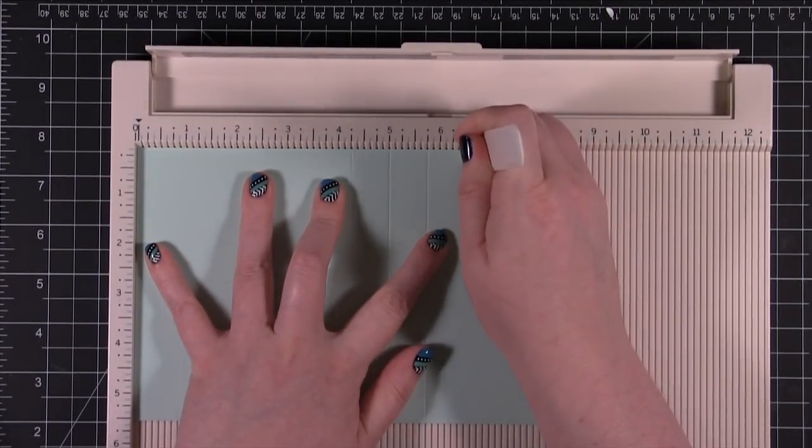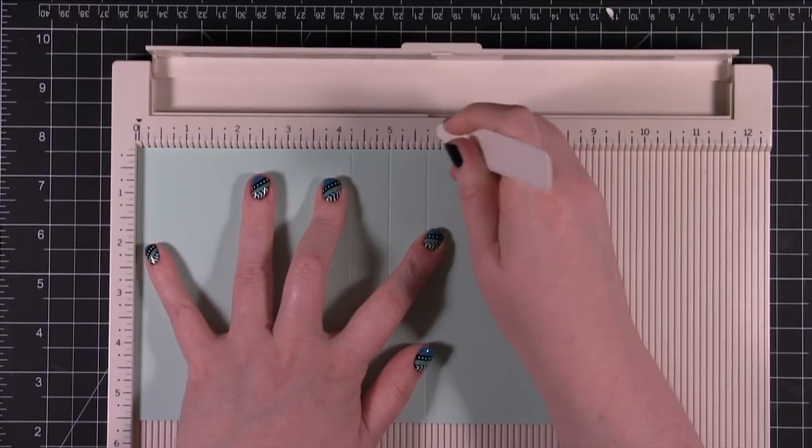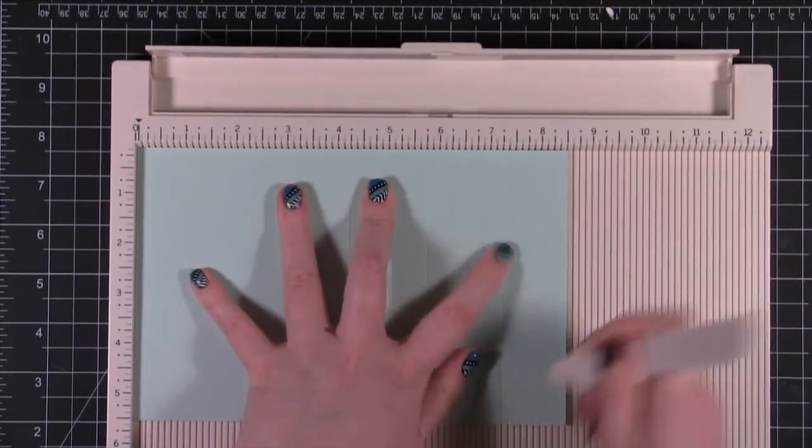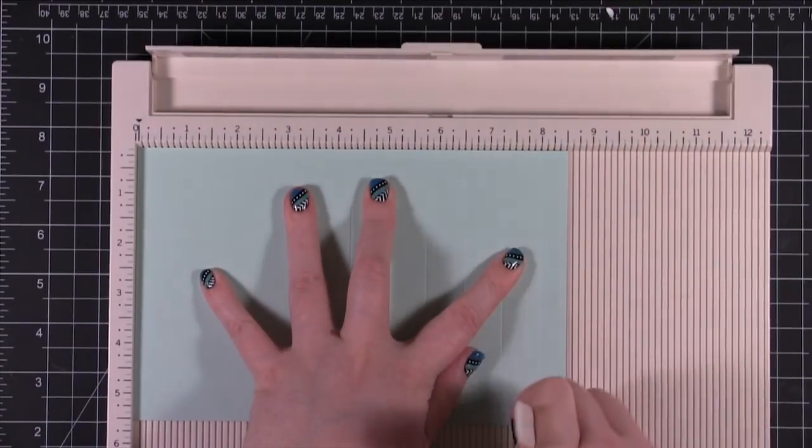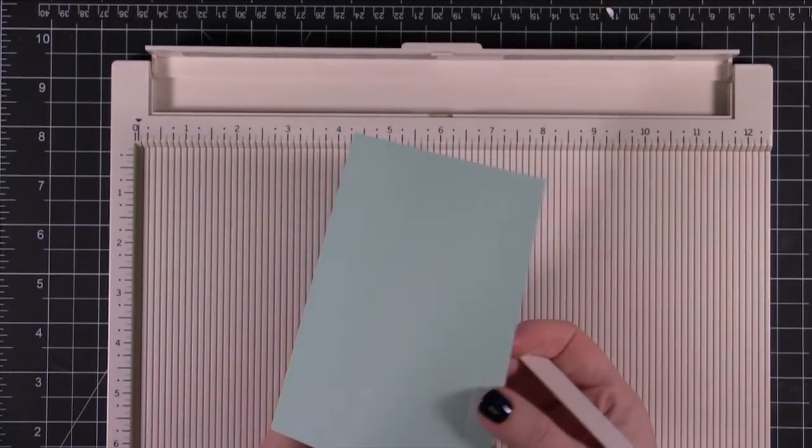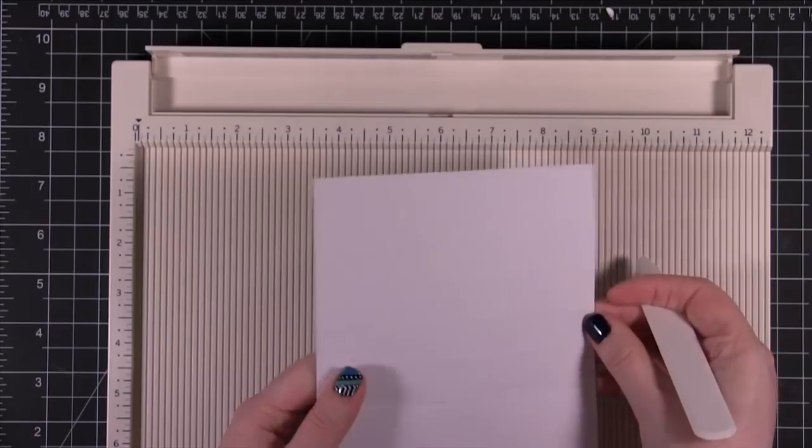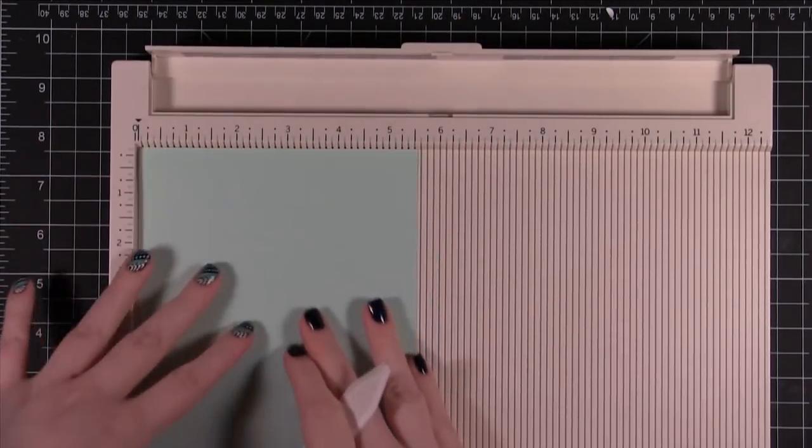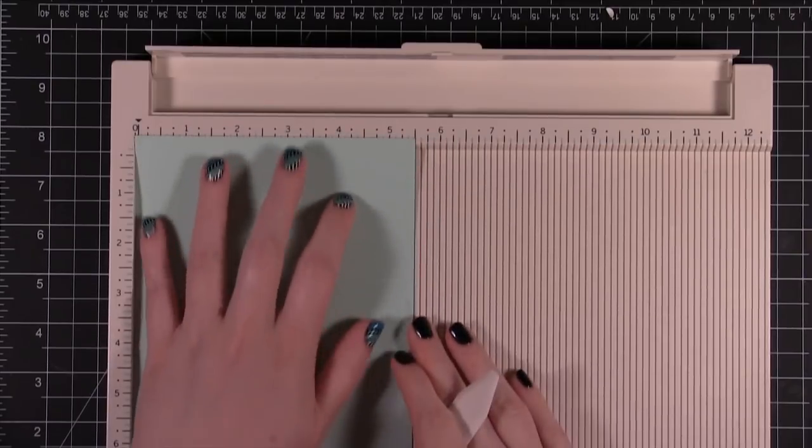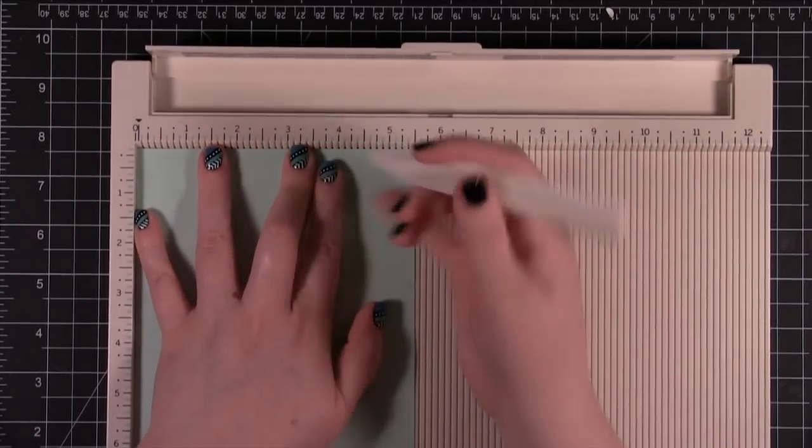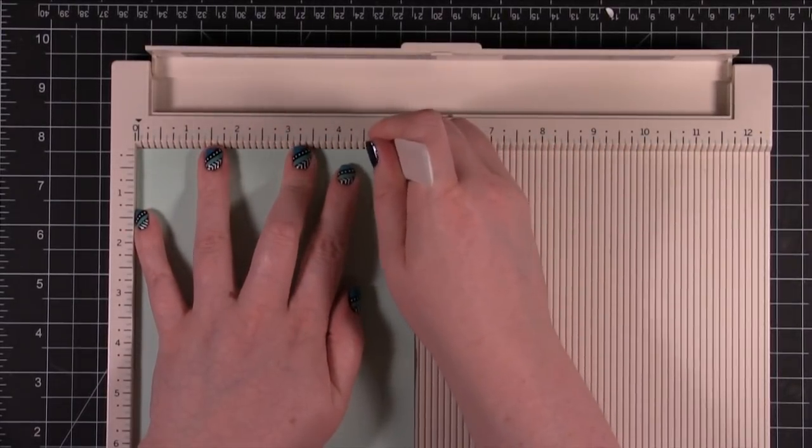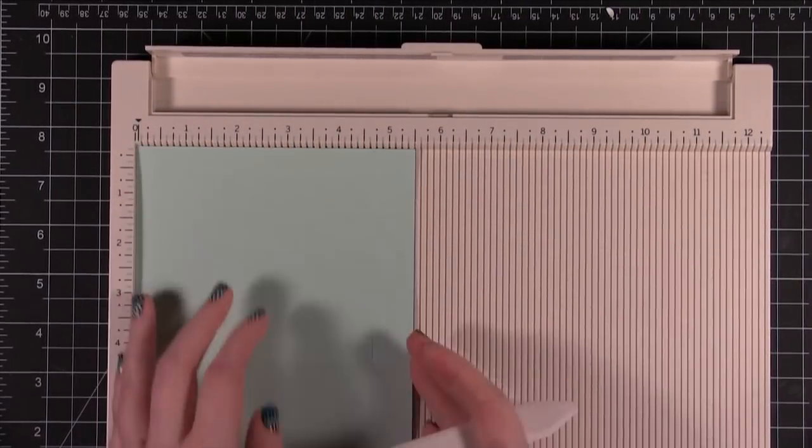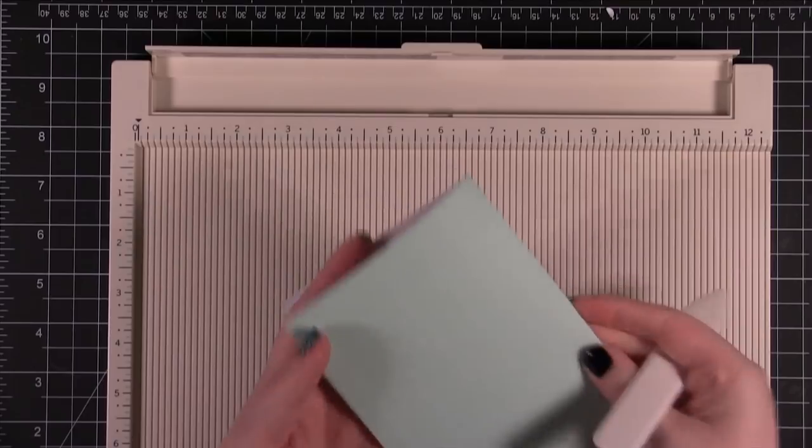Then I have those score lines right there. You can see them on the other side as well. Kind of fun. Then you can turn it this direction and do score lines from the other direction. Coming down to just the fold of the card. You can do a lot of really fun things.